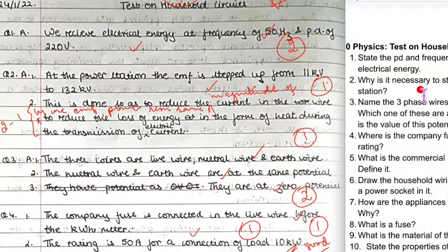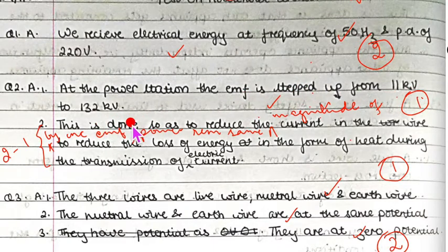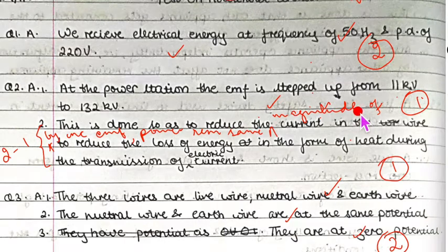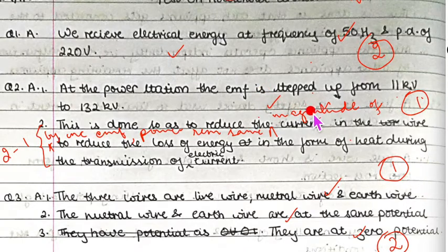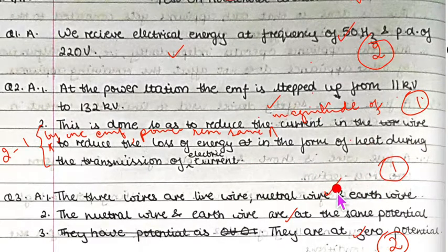Question two: Why is it necessary to step up the EMF at the power station? At the power station, the EMF is stepped up from 11 kilovolt to 132 kilovolt. The answer is: this is done so as to reduce the magnitude of the current in the wire. Note that magnitude of the current refers to how many amperes. By reducing the current, I²RT — the heating effect — becomes less, so the loss of energy in the form of heat in the transmission wire is reduced.